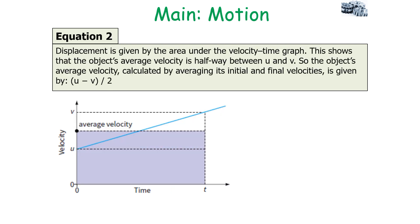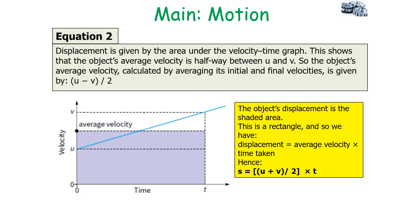The second equation can be derived because displacement is given by the area under a velocity-time graph. This shows that the object's average velocity is halfway between U, the starting velocity, and V, the final velocity. So the object's average velocity is calculated by averaging its initial and final velocities, given by (U + V) divided by 2. Therefore, the object's displacement is the shaded area — average velocity multiplied by time taken. So the displacement S equals (U + V) divided by 2, all multiplied by T.